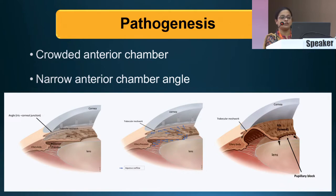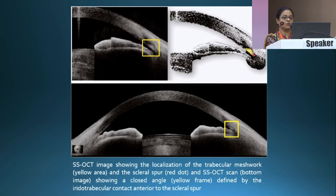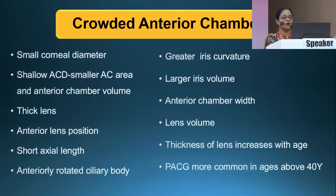Coming to the pathogenesis of angle closure — newer imaging techniques such as anterior segment OCT and UBM have helped us look at angle closure in a new way. Two mechanisms have been considered. First, a crowded anterior chamber and narrow anterior chamber angle, where there is obstruction of normal aqueous flow with bowing of the iris and pupillary block. A swept-source OCT shows a normal angle where we can see the scleral spur and trabecular meshwork, but when the angle is getting closed, we cannot view these features.